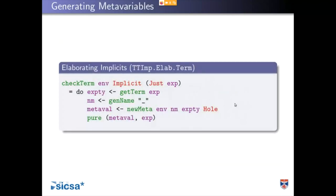One final thing: where do these implicits even come from? Where do we get unification problems from? This is where we add the implicit syntax. Checking an implicit underscore — just the version where we're feeding in a type, so if we already know the type of that implicit — we say: let's get the type we're expecting, invent a new name for it, create a new meta variable with the expected type. And that's it. We're done.